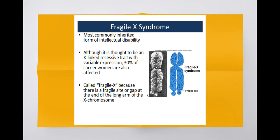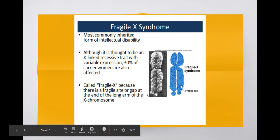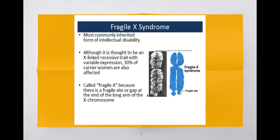Chromosomal abnormalities don't only mean extra or one less - they can also mean something is missing on the chromosome itself. Fragile X syndrome is a commonly inherited form of intellectual disability. Though affected individuals can function, they have a lower IQ. It's linked to the X chromosome - essentially there is a gap at the bottom of the chromosome, so instead of a solid chromosome all the way through, there's a chunk missing. That missing part of the chromosome has an effect on the person's intellectual abilities.